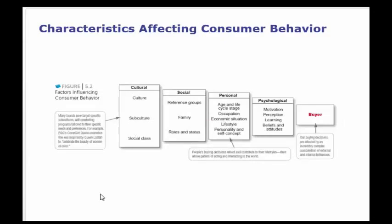The characteristics affecting consumer behavior include cultural factors: culture, subculture, and social class. Social factors include reference groups, family, roles, and status. Personal factors include age and life cycle stage, occupation, economic situation, lifestyle, personality, and self-concept. Psychological factors include motivation, perception, learning, beliefs, and attitudes. All of these affect consumer behavior.